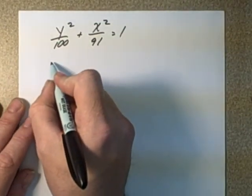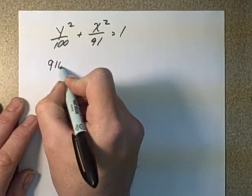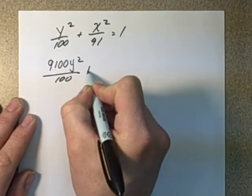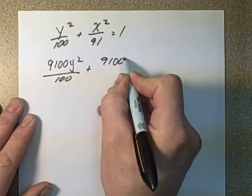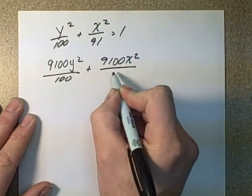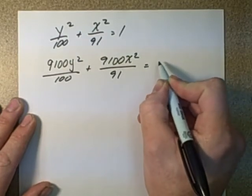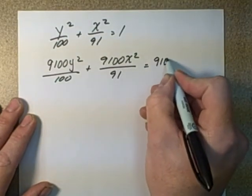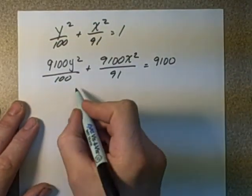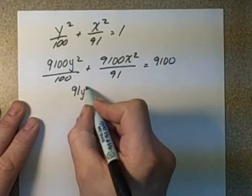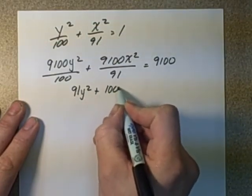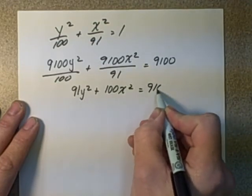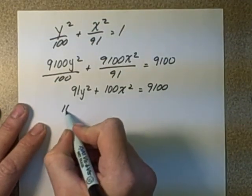So we end up getting 9,100 Y squared over 100 plus 9,100 X squared over 91 equals 9,100. So then we can divide out, we get 91 Y squared plus 100 X squared equals 9,100. Bring this over to the other side and arrange it in proper order.